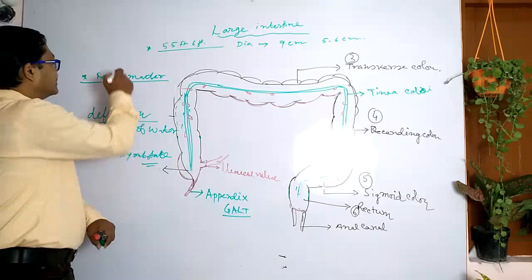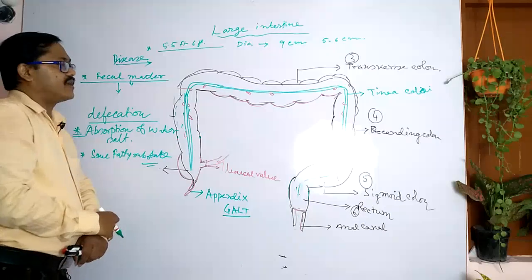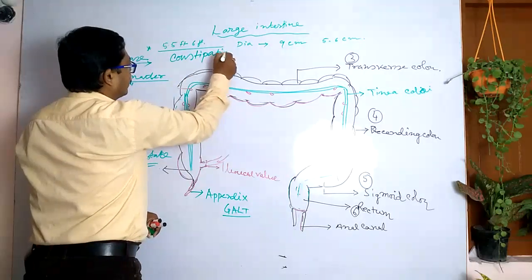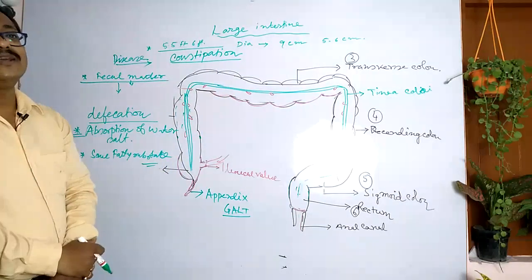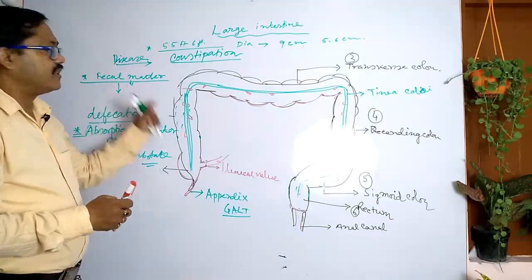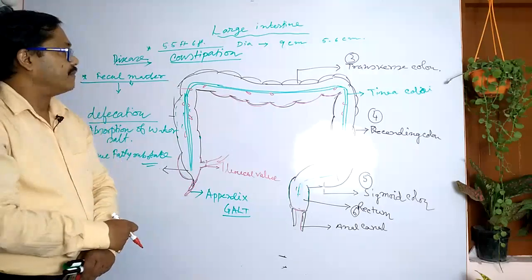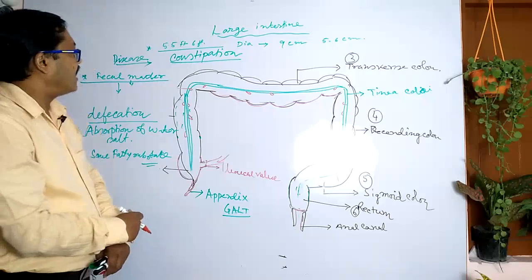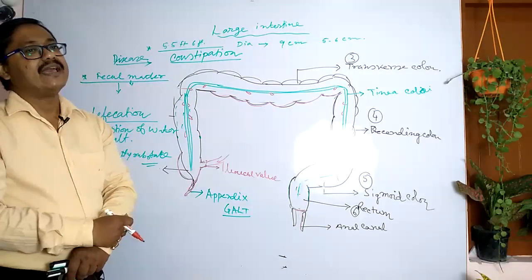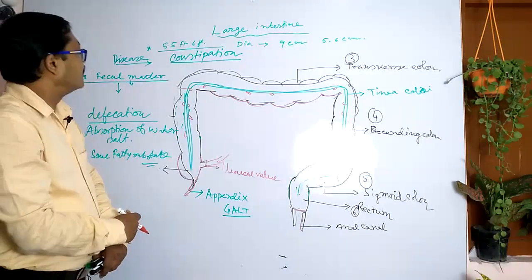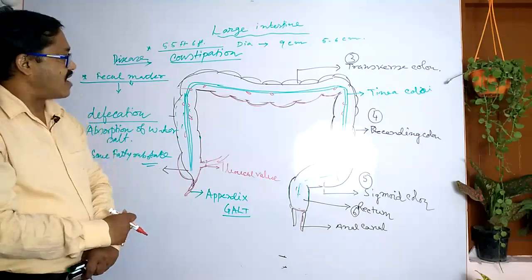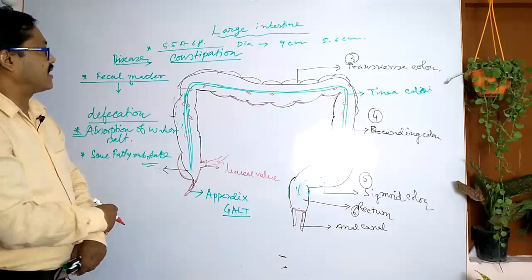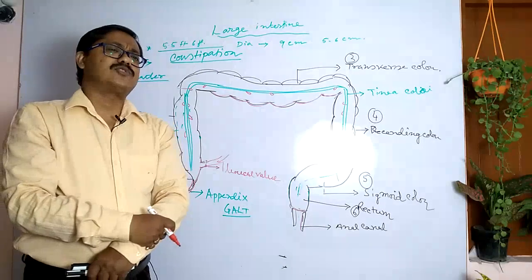Let's discuss some diseases of the large intestine. One very important disease is constipation. Constipation is the hardening of the stool. When the fecal matter becomes very hard due to excessive absorption of water, low mucus secretion, and a diet containing large amounts of protein and fat, the fecal matter gradually hardens. This hardened fecal matter causes constipation — that is, difficulty during the defecation process.